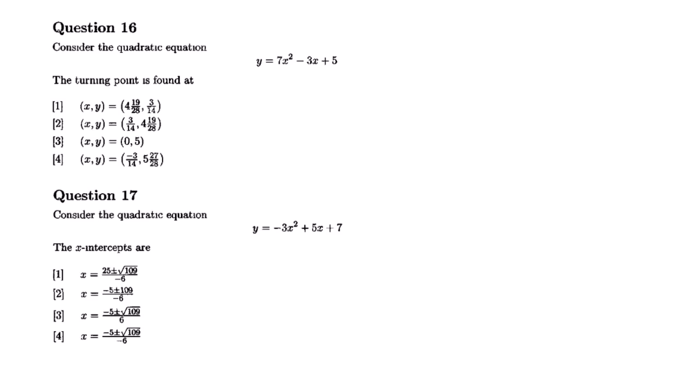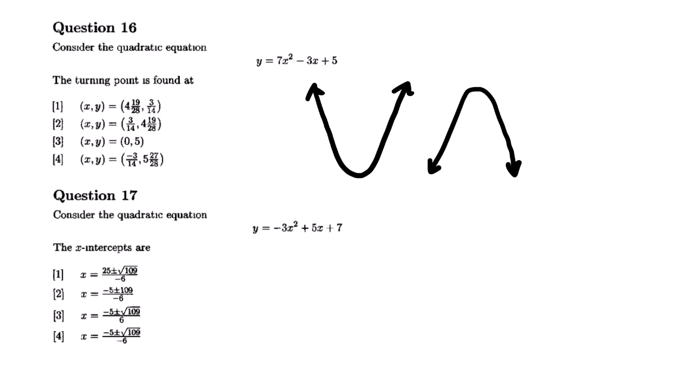As you can see, these questions are basically based on functions. Question 16 says: consider the quadratic equation y equals 7x squared minus 3x plus 5 — the turning point is found at. We are given options. Now remember that a quadratic function has a shape that is either facing up or facing down. Since the value of a is positive, we are looking for the minimum turning point.